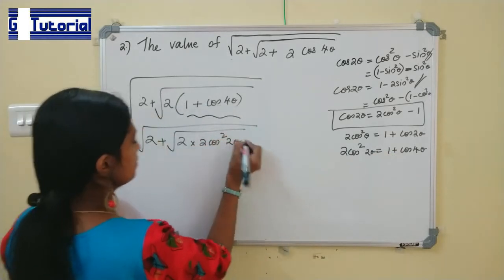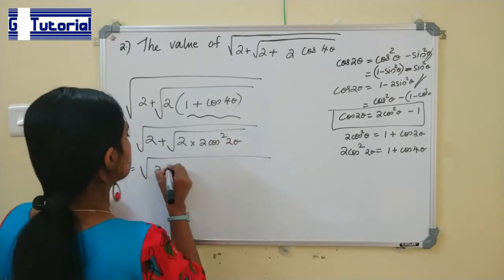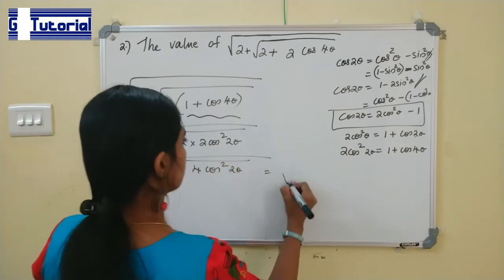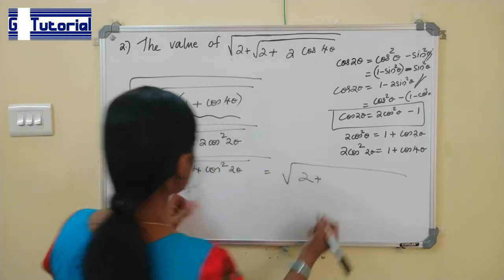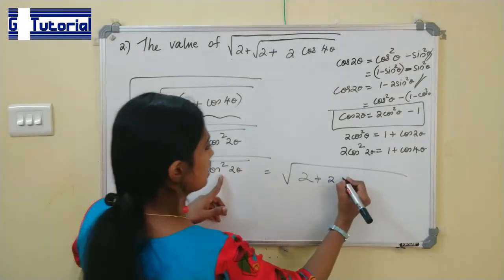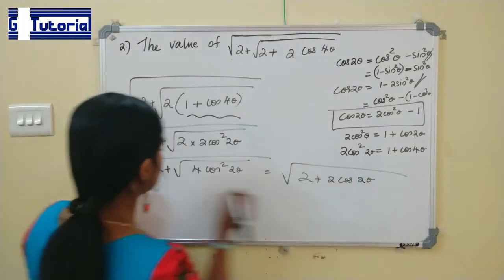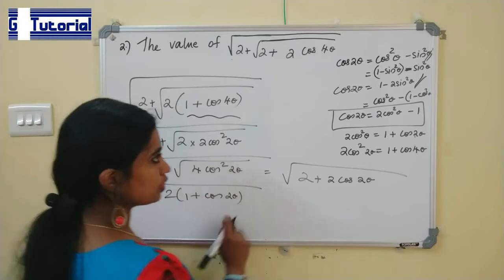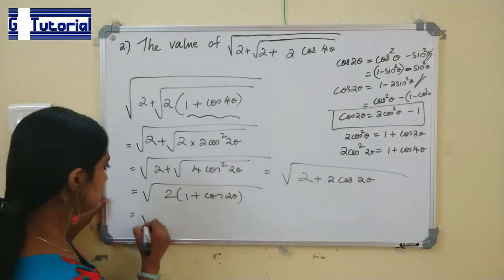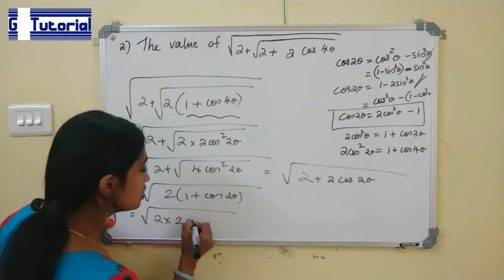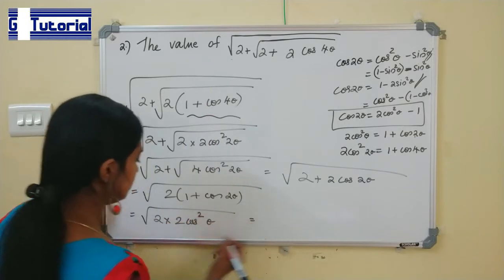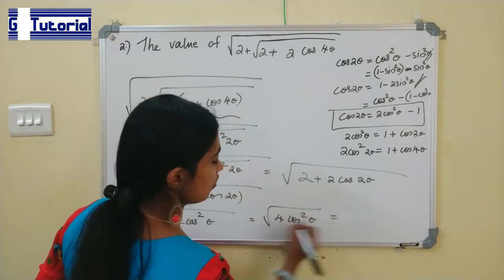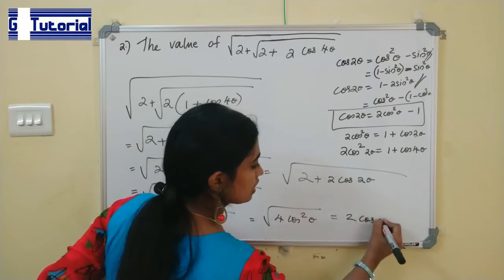So we get √(2 + √(4cos²2θ)) = √(2 + 2cos2θ). Since √4 = 2 and √cos²2θ = cos2θ. Now taking 2 as common: 2(1 + cos2θ) = 2 × 2cos²θ = 4cos²θ. So we get √(4cos²θ) = 2cosθ. That is the answer.